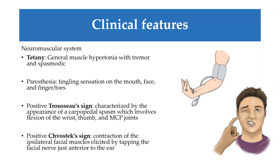A positive Trousseau sign is characterized by flexion of the wrist and the thumb at the metacarpophalangeal joints, triggered by inflating a blood pressure cuff. This triggers tetany of the hand. The Chvostek sign involves tapping the facial muscle — due to hyperexcitability, this causes twitching, which is a positive sign. Additionally, patients experience tingling sensation around the mouth and face, known as paresthesia.